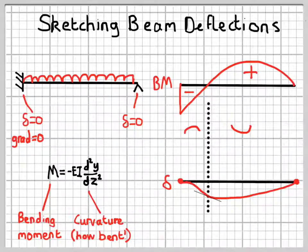I've also indicated there, with the short black line, the point of contra-flexure, where the beam is not bent at all.